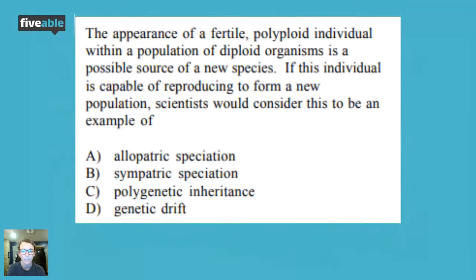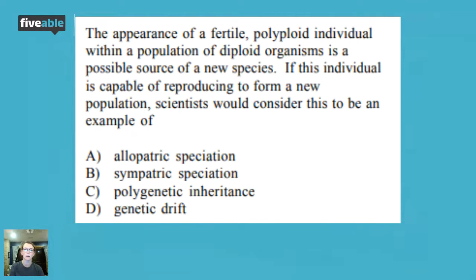One more question from an old AP exam: 'The appearance of a fertile polyploid individual within a population of diploid organisms is a possible source of a new species. If this individual is capable of reproducing to form a new population, scientists would consider this to be an example of...' The answer is sympatric speciation — because we talked about polyploidy as a great way to prevent gene flow within the same area. That's an example of how they might apply a sympatric speciation question on the AP exam.